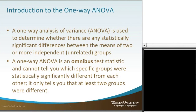One thing to consider about the one-way ANOVA: it's an omnibus test statistic. When you have multiple groups, it cannot tell you which of the specific groups were statistically significantly different from each other. It can only tell you that at least two out of whatever five or six groups were different. It can only identify that there is a difference amongst the means of the groups, but it can't tell you which pairs.